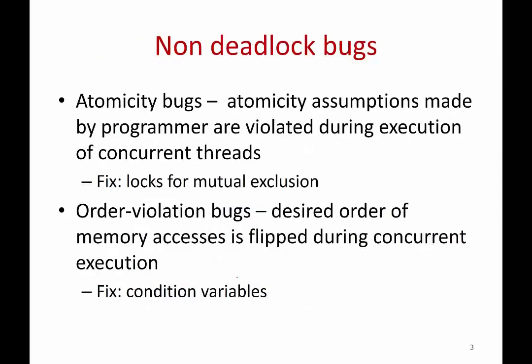Non-deadlocked bugs are of two types. The first are atomicity bugs — bugs that happen because the programmer assumes certain parts of the code will execute atomically, but they get interrupted in between and the atomicity assumption is violated. The fix for such bugs is to use locks: ensure mutual exclusion so that the critical section executes atomically by acquiring a lock at the start and releasing it at the end.